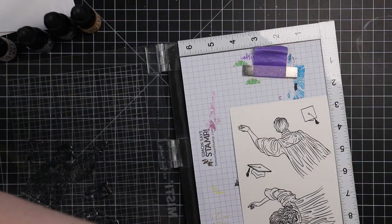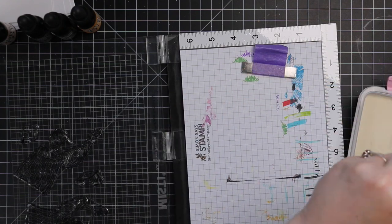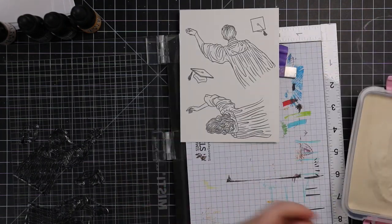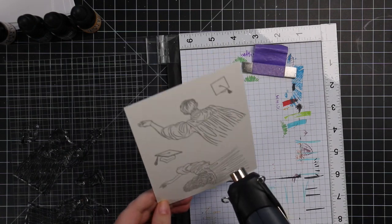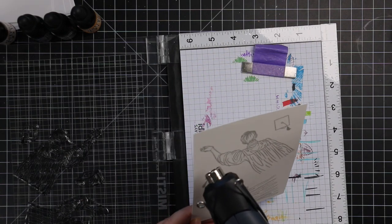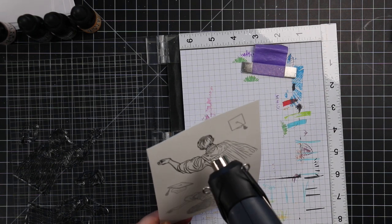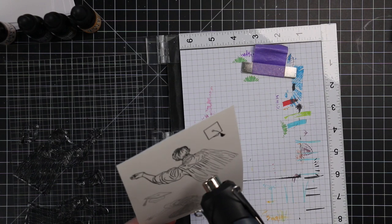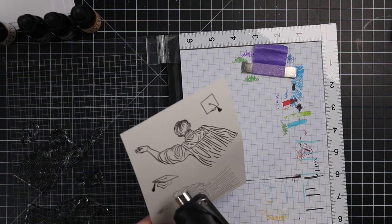You could watercolor just like this. You don't need to heat emboss when you use VersaFine Clair inks because they're water resistant, but I like to heat emboss. It gives me that little bit of raised edge, which just means that I don't have to be as careful when I'm watercoloring. I don't have to worry so much about areas running into each other, things like that.